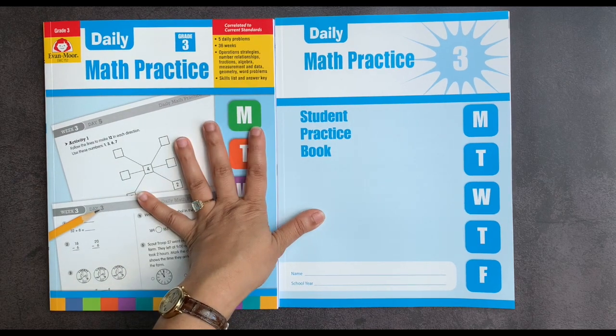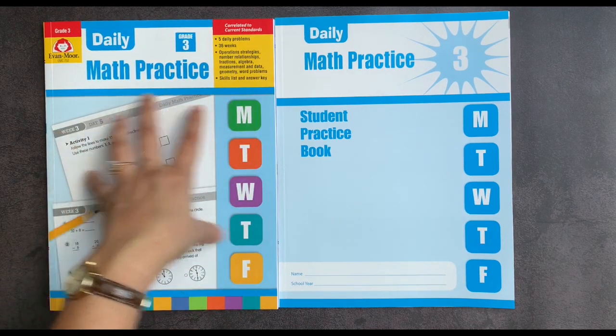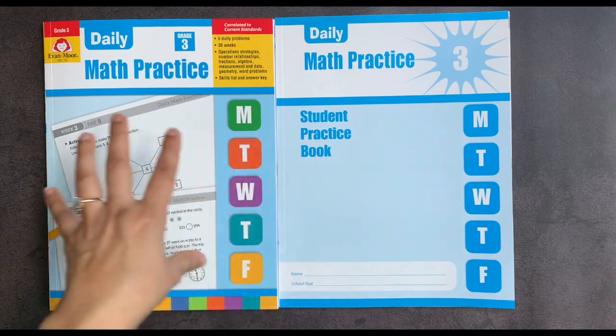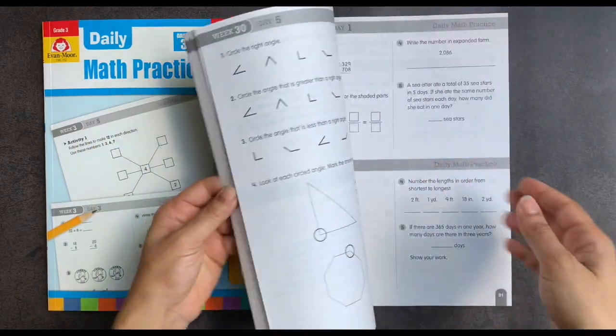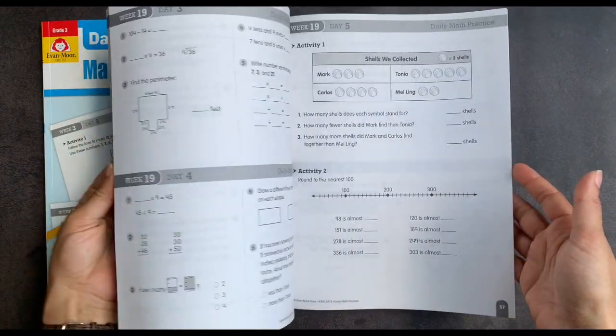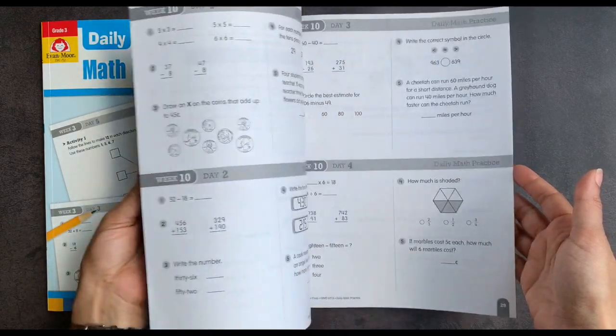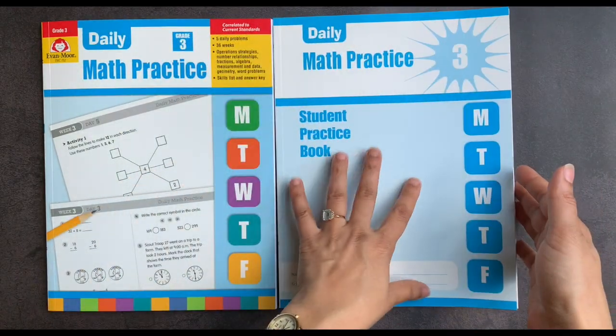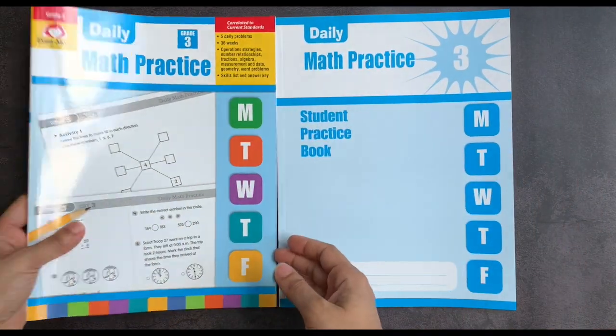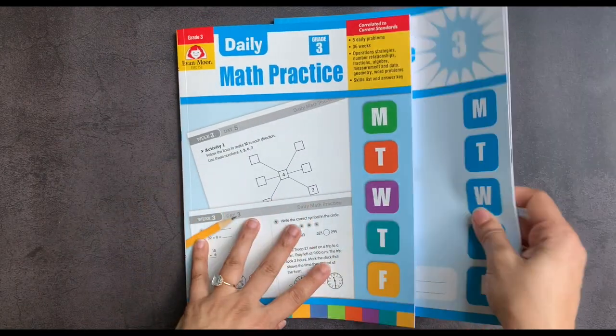Now the main difference between the teacher's edition and the student book is that the student practice book has only the problems separated out by weeks and days. It does not include an answer key or any state correlations or teaching prompts. The teacher book, however, is exactly the same as the student book, but it also includes teaching prompts.